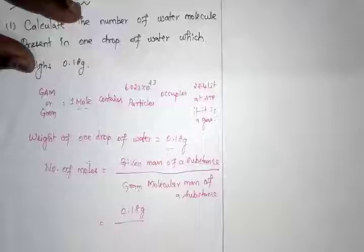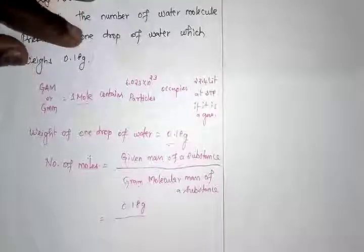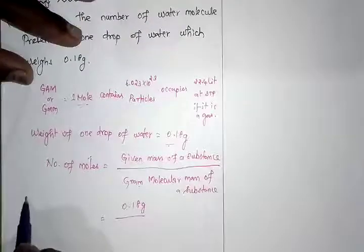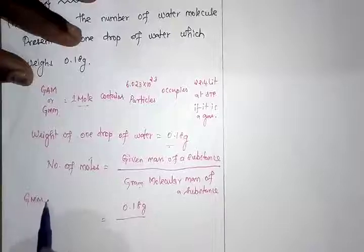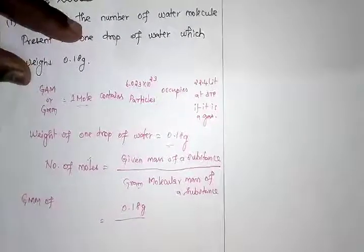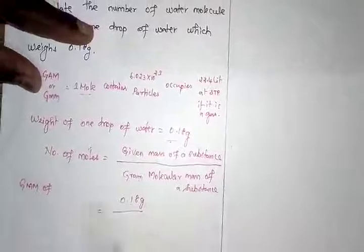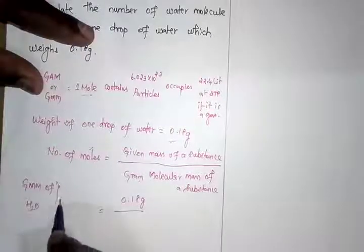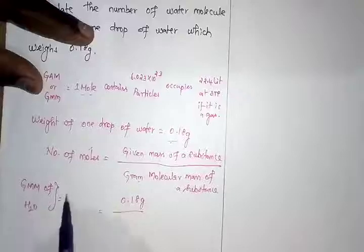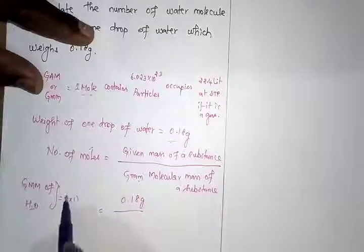So let us see how to calculate the molecular mass. Gram molecular mass of water is equal to: how many hydrogen we have? 2. 2 × atomic mass of hydrogen is 1.